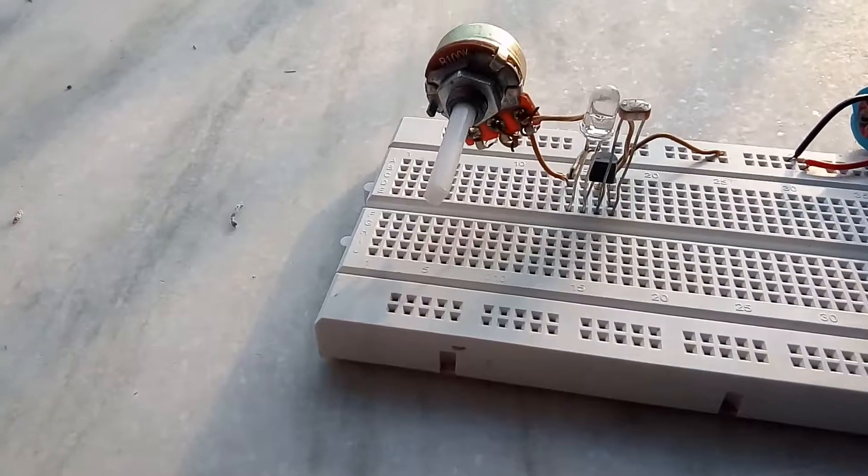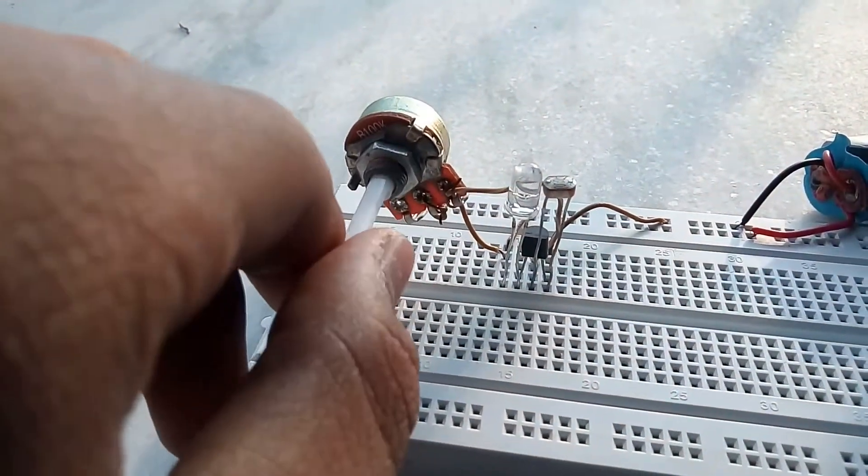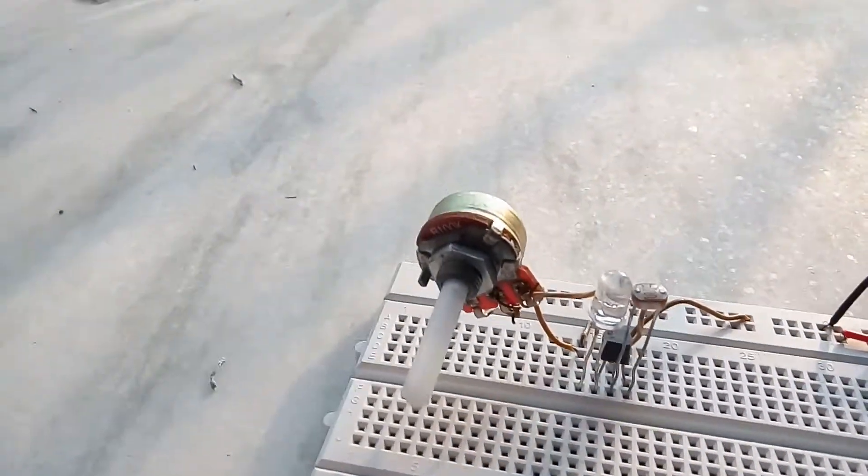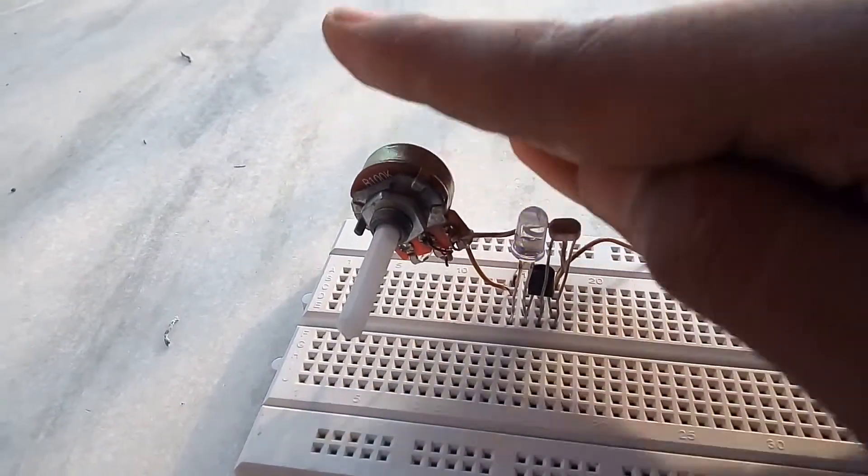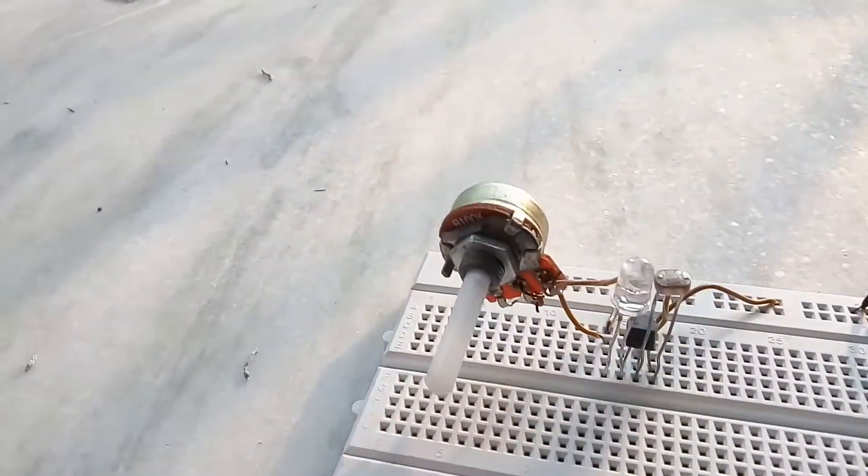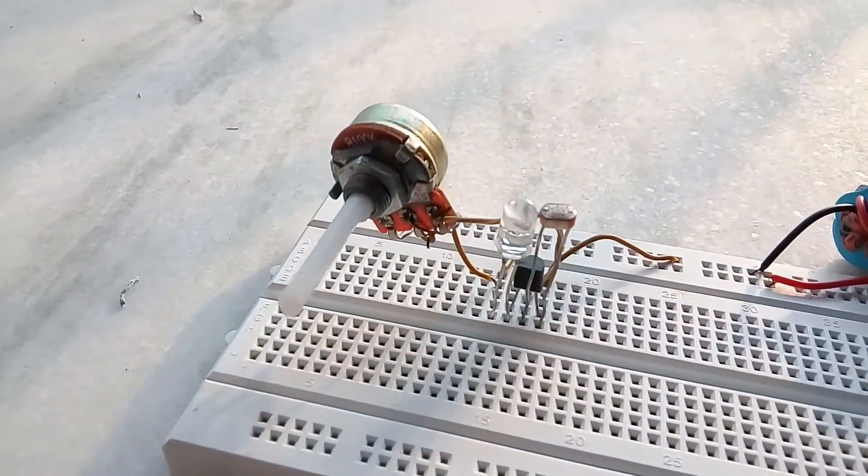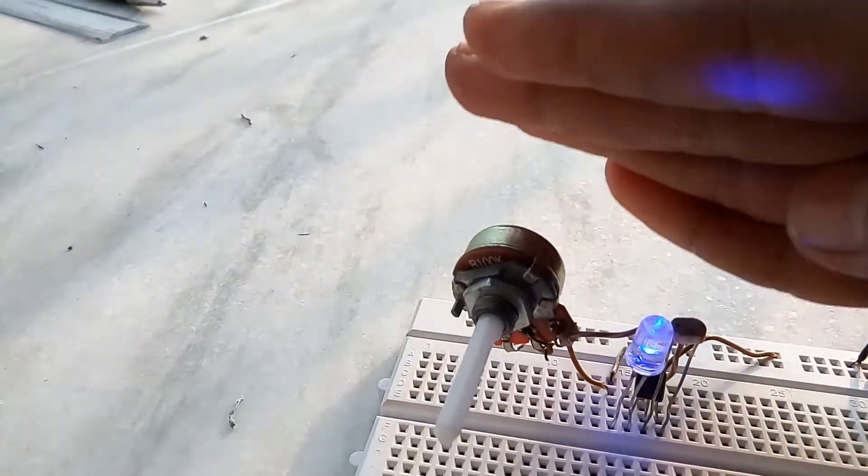See that when I turn the potentiometer the light is glowing low, but when I turn this towards the right side the LED glows more.